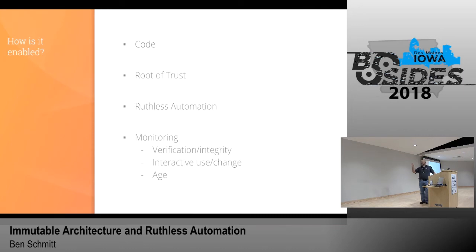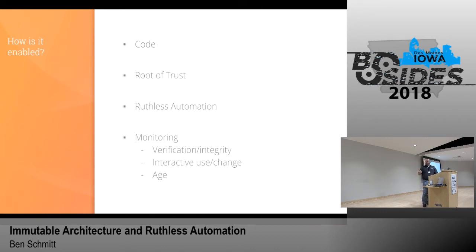How do you enable immutable architecture? There has to be code — most cases Python. You need rooted trust: a safe place to go back to. You need ruthless automation, meaning getting humans out of the equation and quite frankly turning everything into a honeypot. And then monitoring — you have to monitor this stuff so verification of integrity becomes easier. Interactive use and change becomes rogue. The age of things in your environment also becomes an interesting indicator.